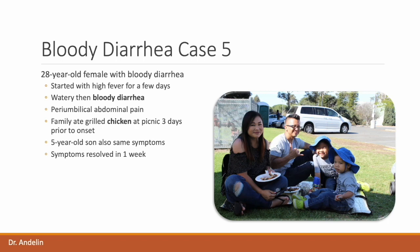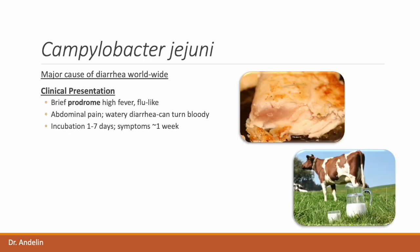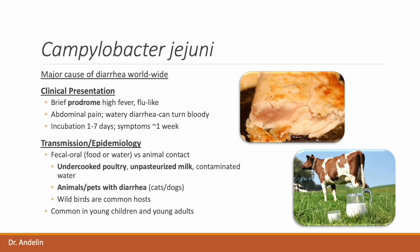In our next scenario, we have a 28-year-old female with bloody diarrhea. Her symptoms began with a high fever that then developed into watery diarrhea within a day or two, which turned to bloody diarrhea on day two. She's had associated peri-umbilical abdominal pain. The family ate grilled chicken at a picnic three days prior to onset of symptoms, and her five-year-old son also has the same symptoms. Overall symptoms resolve within about one week. This is consistent with Campylobacter jejuni, the most common cause of community-acquired bacterial gastroenteritis in the United States. Classic presentation is a prodrome of high fever and headache, followed by abdominal pain and then watery diarrhea that turns bloody. Incubation period is about one to seven days with symptoms lasting about one week.